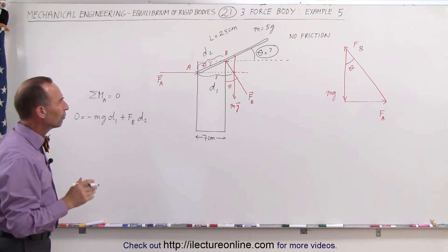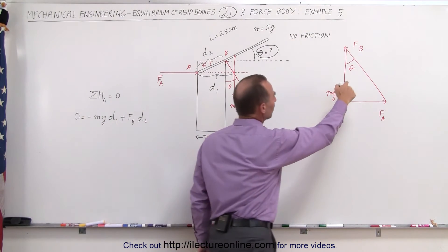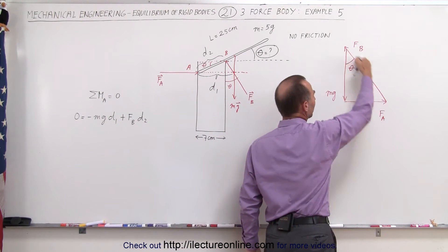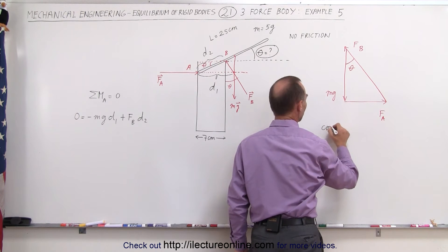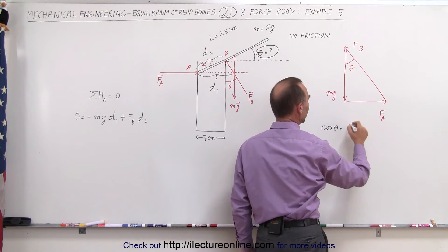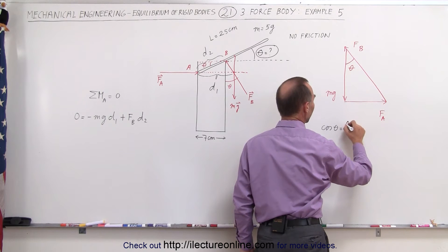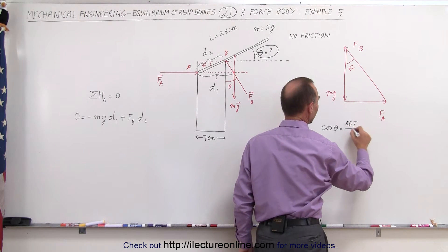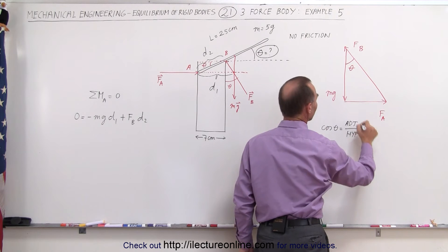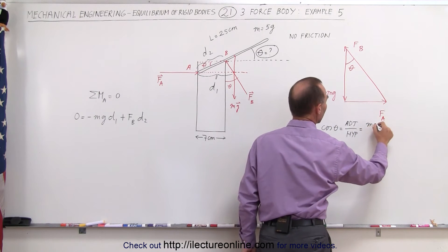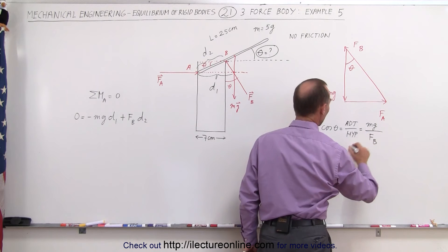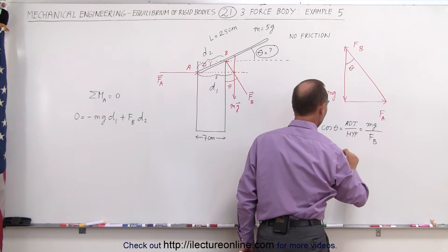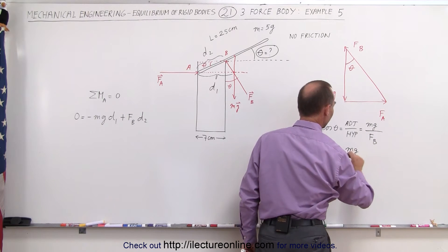Now we have to relate force B to Mg through the angle. Force B is the hypotenuse and Mg is the adjacent side. So the cosine of theta equals the ratio of the adjacent side Mg divided by the hypotenuse Fb. Which means that force B is equal to Mg divided by the cosine of theta. So there's a relationship right there.